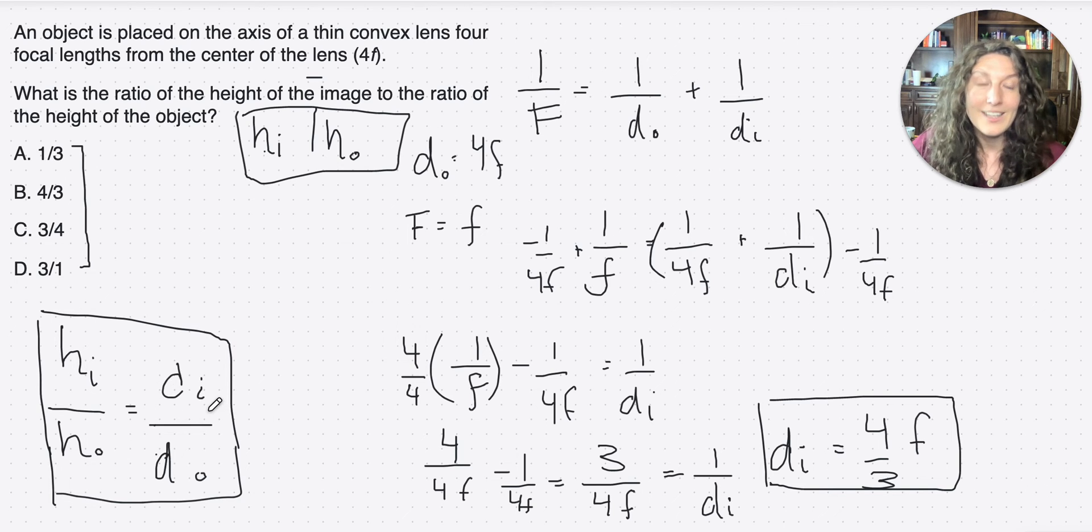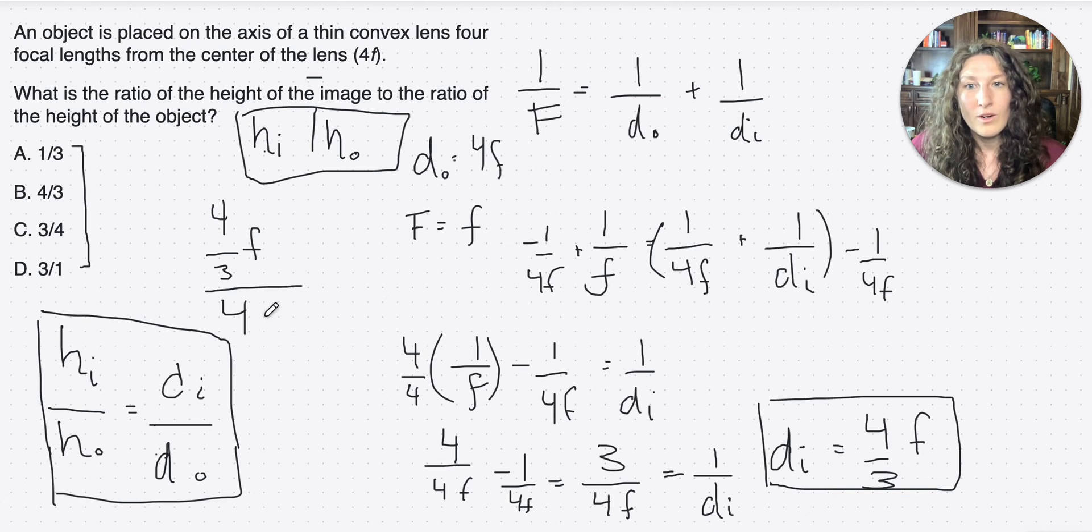And check it out, we have di in terms of f, and we have do, so we just need to plug it in. So let's go ahead and do that. 4 thirds f is di over 4 f is do. The f's cancel, the fours cancel. We're left with a ratio of 1 over 3, which equals a.